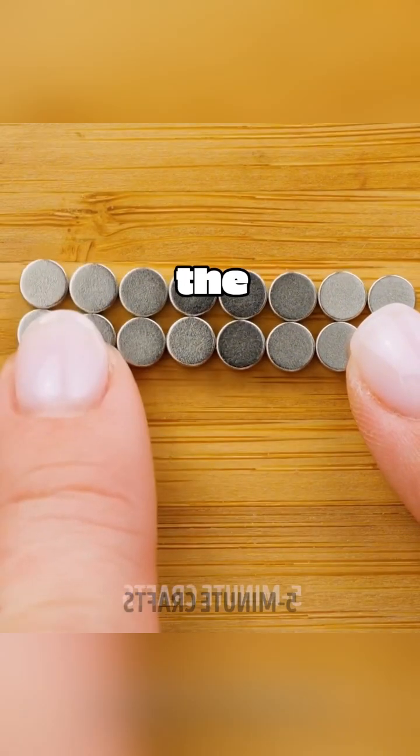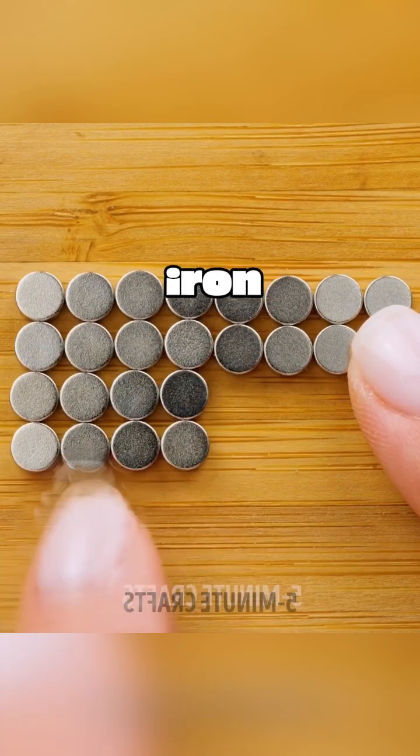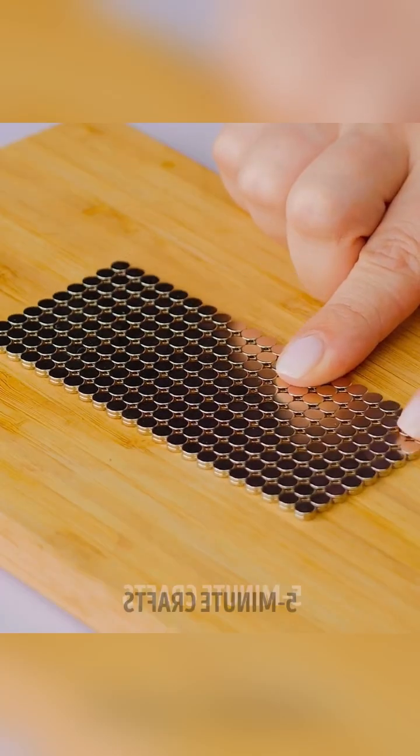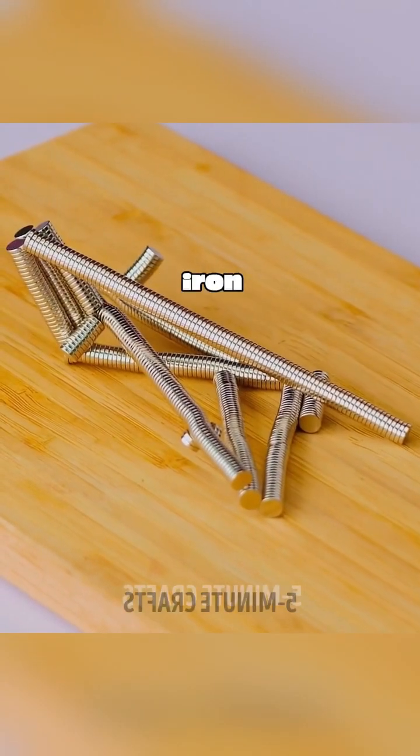Place an array of small magnets on the tabletop, then smash an iron rod towards the magnets. These magnets instantly become the same shape as the iron rod.